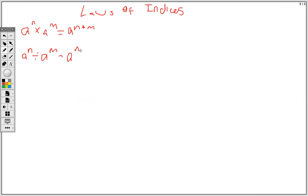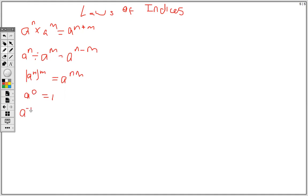And if you realize, when you're subtracting we write the base ones, and when we're adding we write the base ones. When I have one base and a power with another power outside the bracket, this means we multiply the powers — so we have n×m, meaning we multiply the powers. And a to the zero is the same thing as one.